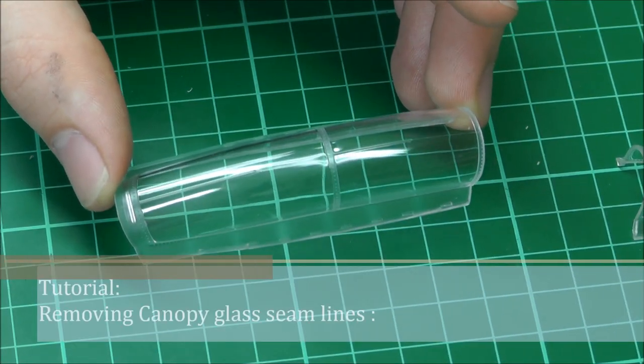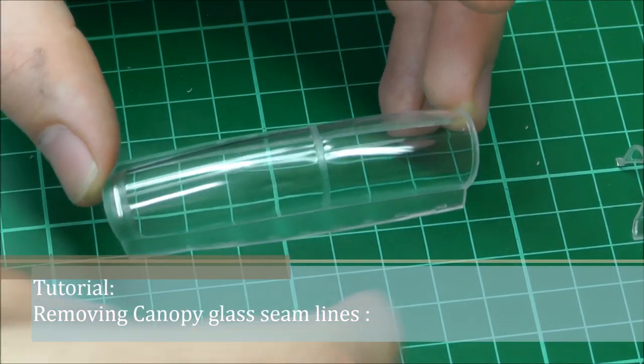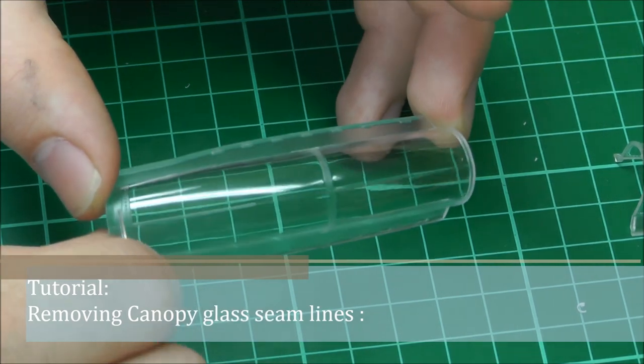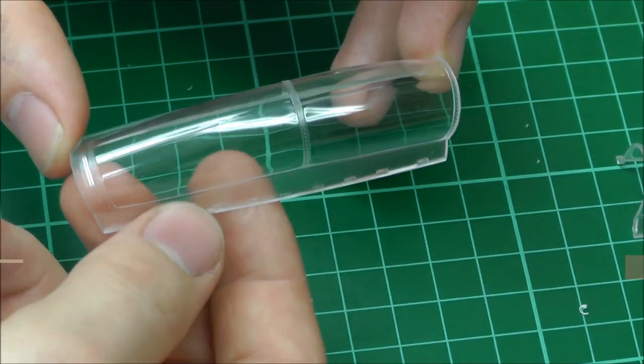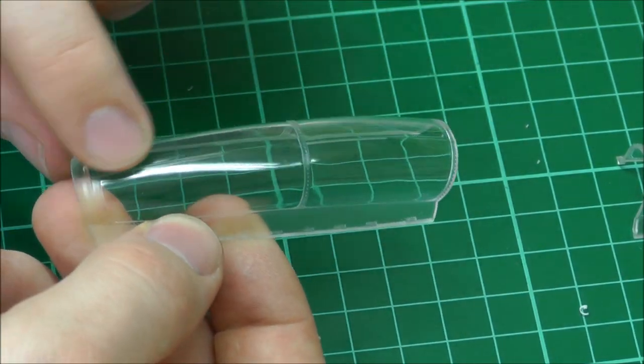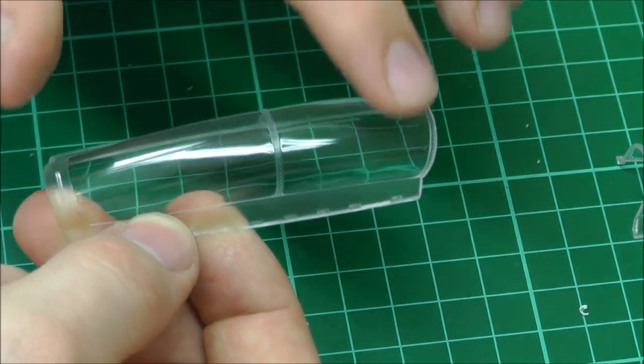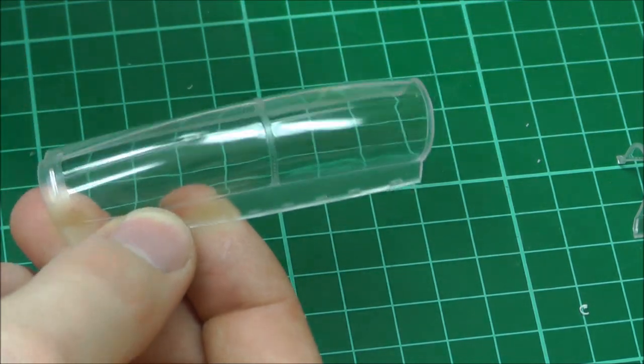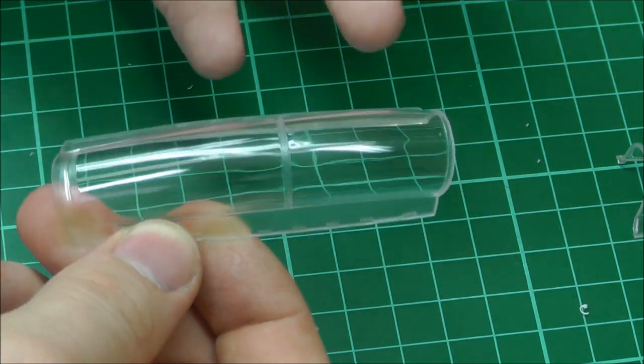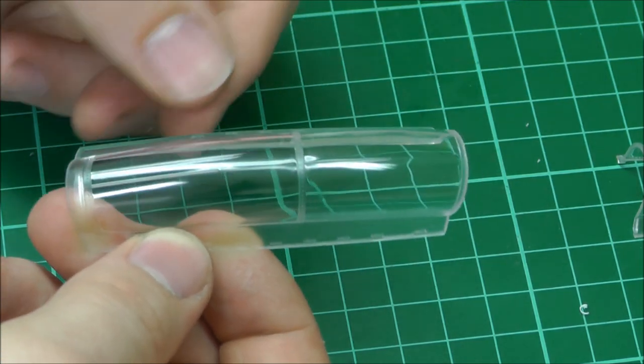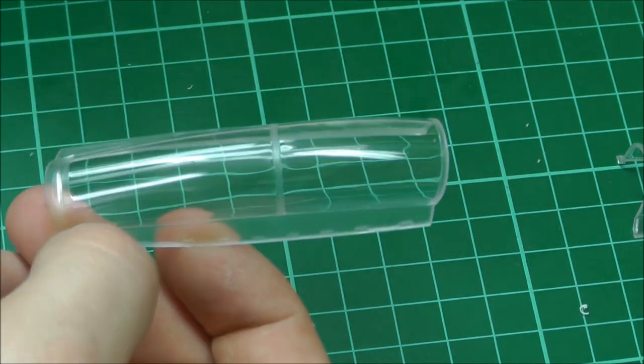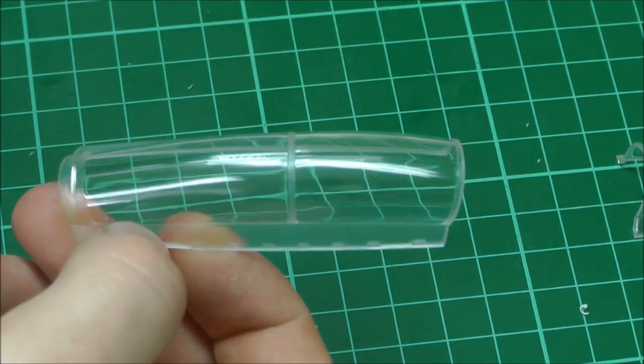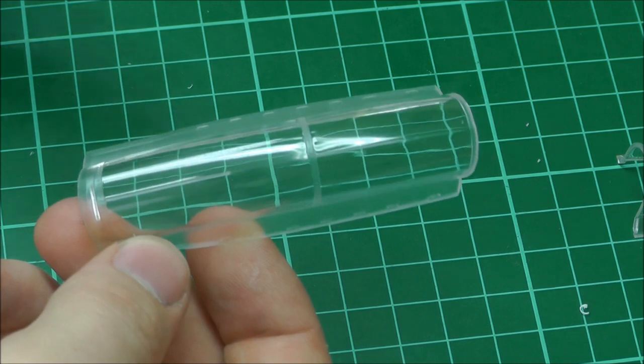Let's get started on removing seam lines from canopies. You end up having seam lines going down the center of canopies these days and they don't look that nice. We want to get rid of them to have ourselves a nice, shiny, realistically looking canopy as possible because let's face it, it's like the magpie effect - you want to look at the cockpit area.